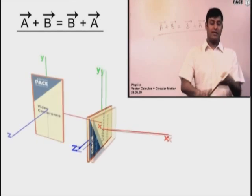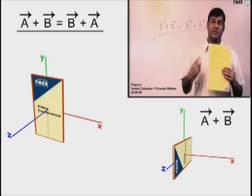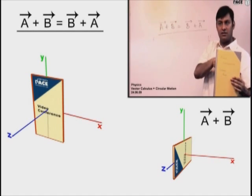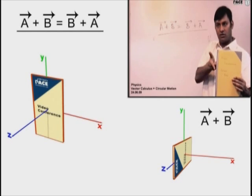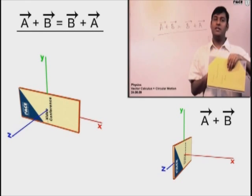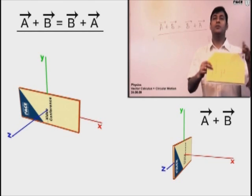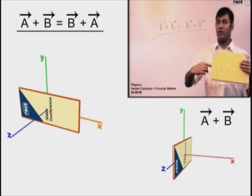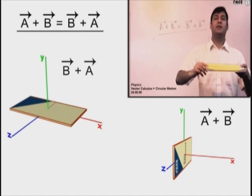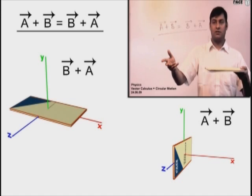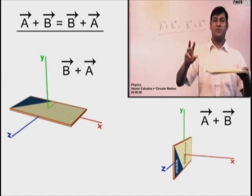The final orientation is NOT the same. So A + B is not equal to B + A, meaning θ₁ + θ₂ ≠ θ₂ + θ₁ for angular displacements. Therefore, angular displacement is not a vector — it fails the commutative property of vector addition.